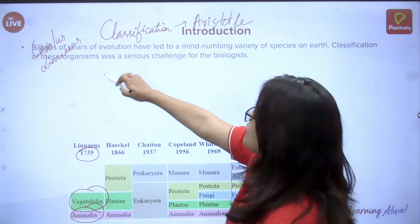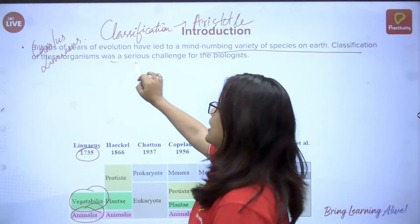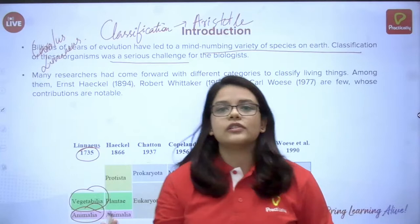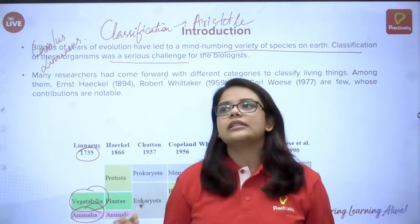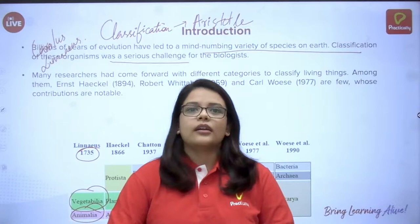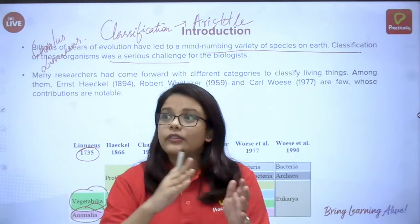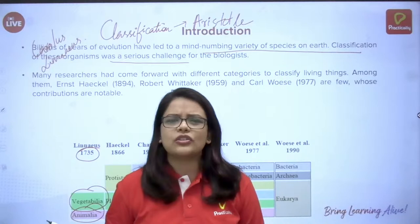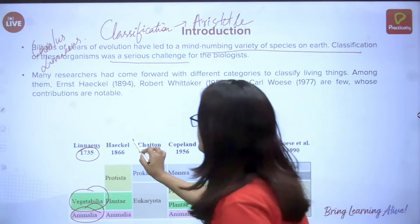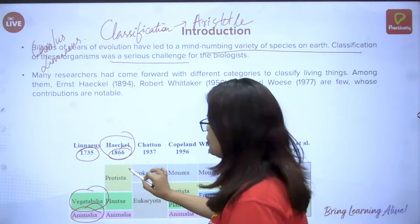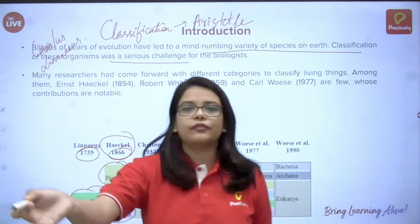Billions of years of evolution have led to a mind-numbing variety of species on Earth, making classification a serious challenge. After Linnaeus, a lot of people started saying it's not just animals or plants — there are other organisms, microorganisms we cannot see with the naked eye but can see with microscopes. So you cannot keep it at just plants and animals. Ernst Haeckel, in the year 1866, divided organisms into Protista, Plantae, and Animalia.